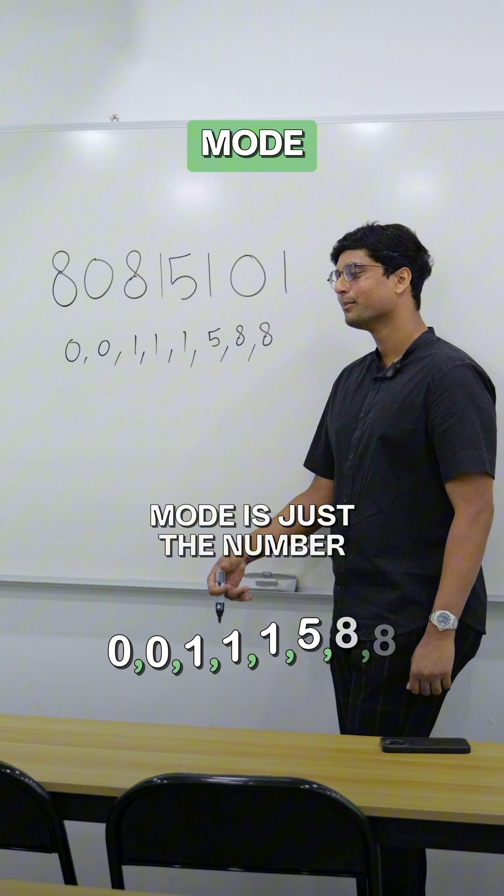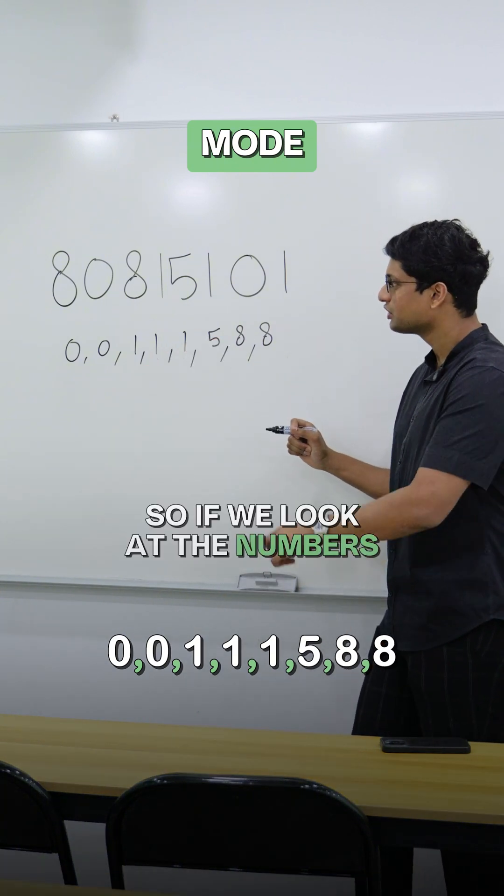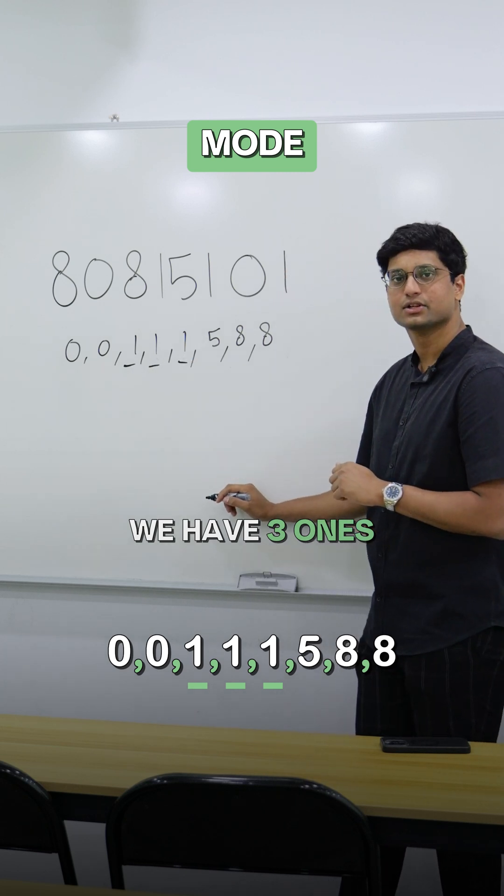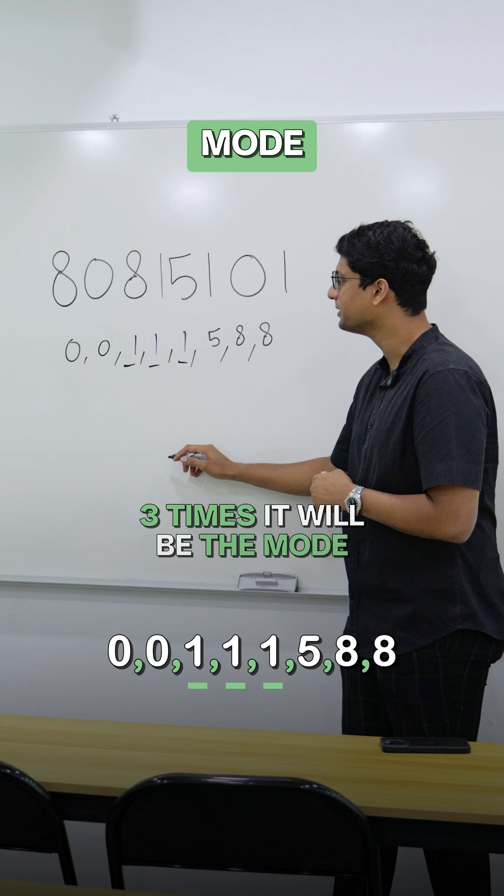Now for mode. Mode is just the number that appears the most. So if we look at the numbers, we have three 1s. So since 1 appears 3 times, it will be the mode.